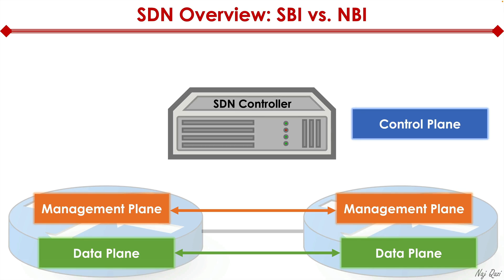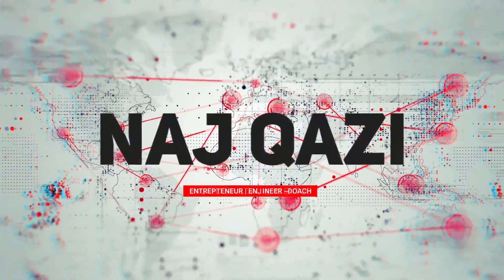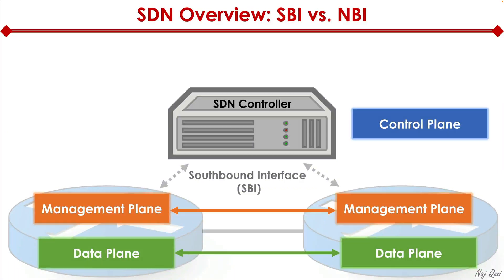From a terminology standpoint, there are a couple of terms you want to familiarize yourself with. When it comes to the SDN controller, we have what's called a southbound interface, or SBI for short. That's the interface responsible for communicating with the network endpoints, like routers, switches, firewalls, and load balancers. All the endpoints get programmed by the SDN controller through the southbound interface.